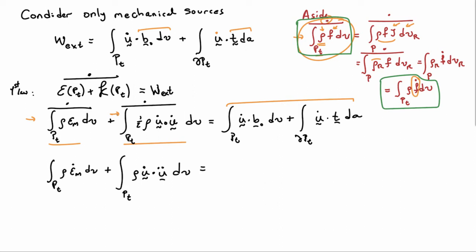Applying this to the first integral, the time derivative acts on epsilon_m, the internal energy density. In the second integral, the time derivative acts at two places on u-dot, which is why the one-half disappears, yielding rho times u-dot dotted with the acceleration.